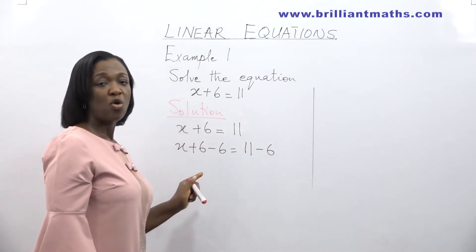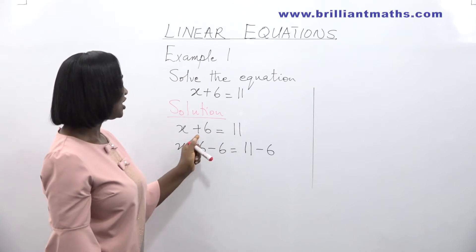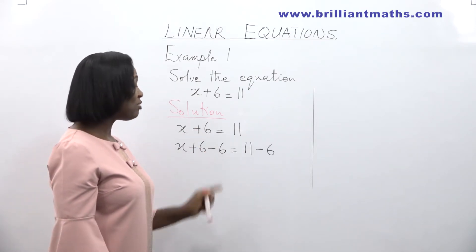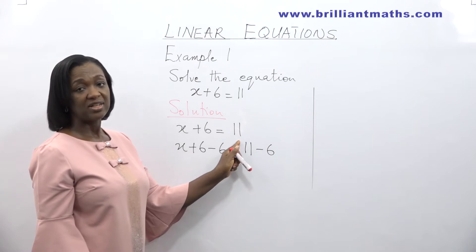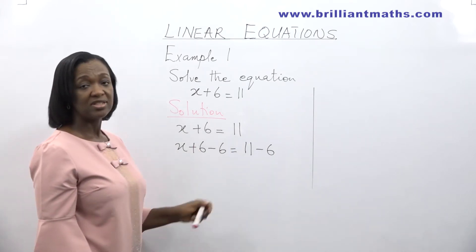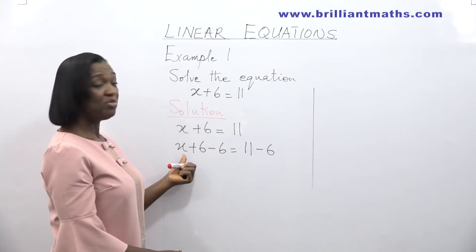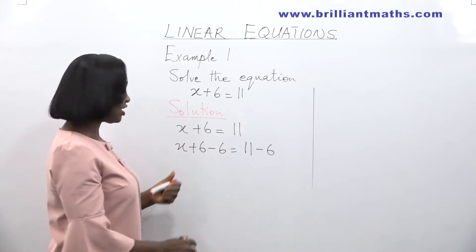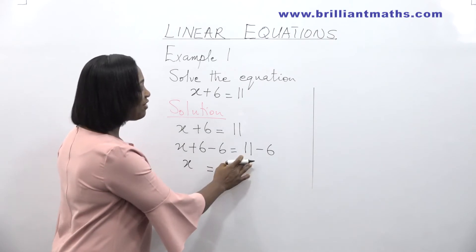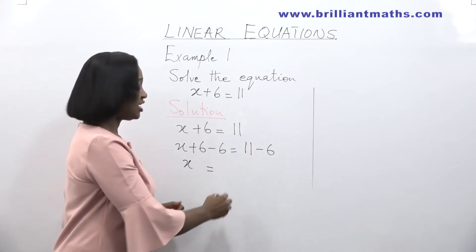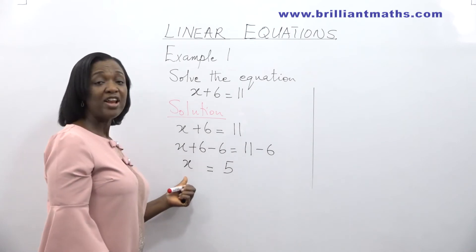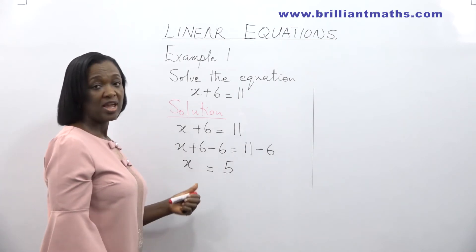In this method, whatever operation you carry out on the left hand side of the equation, you carry out the same operation on the right hand side. So 6 plus 6 minus 6 is 0 — I have eliminated 6 from this side of the equation. So I have x is equal to 11 take away 6, which is equal to 5. The value of x in this equation is 5.